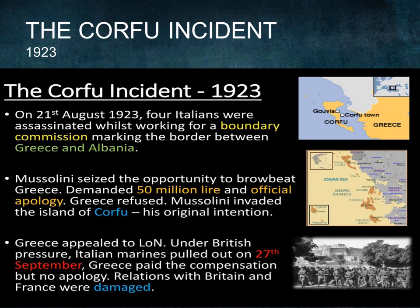Greece protested to the League of Nations, but the League seemed unable and unwilling to respond. Italy was one of the four permanent members of the council, so the League acted very carefully. The Corfu incident was seen as a serious failure of the League in the 1920s, showing that powerful nations could still bully a less powerful neighbor. The dispute was finally settled through the mediation of Britain and France.